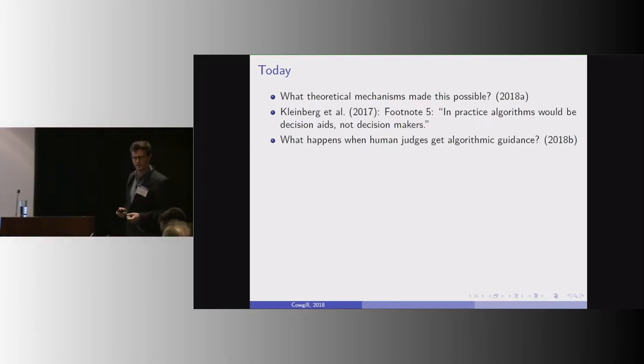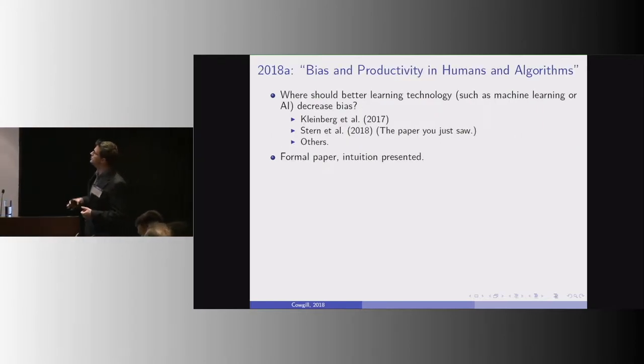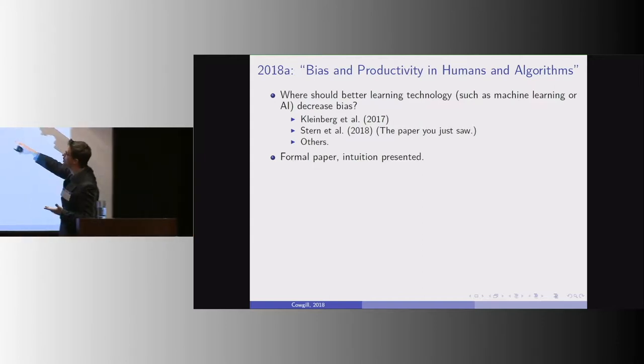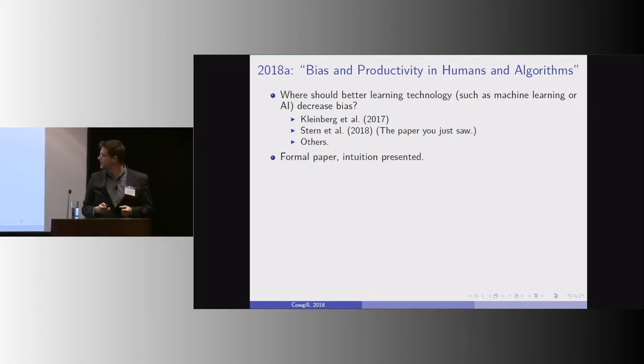So let me begin by talking about the first topic. So the model in this paper, Bias and Productivity, is about where should we expect better learning technology to decrease bias. So you think of this in settings like the paper you just saw, like in the Kleinberg paper, and in others.